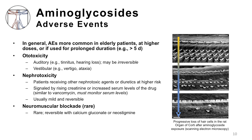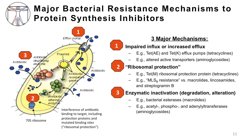Neuromuscular blockade is very rare and is reversible with the medications listed. This slide shows the three major bacterial resistance mechanisms against the protein synthesis inhibitors: number one, impaired concentrations within the bacterial cell, whether by impaired influx or increased efflux out of the cell; number two, ribosomal protection; or number three, enzymatic inactivation via degradation or alteration of the antibiotic.